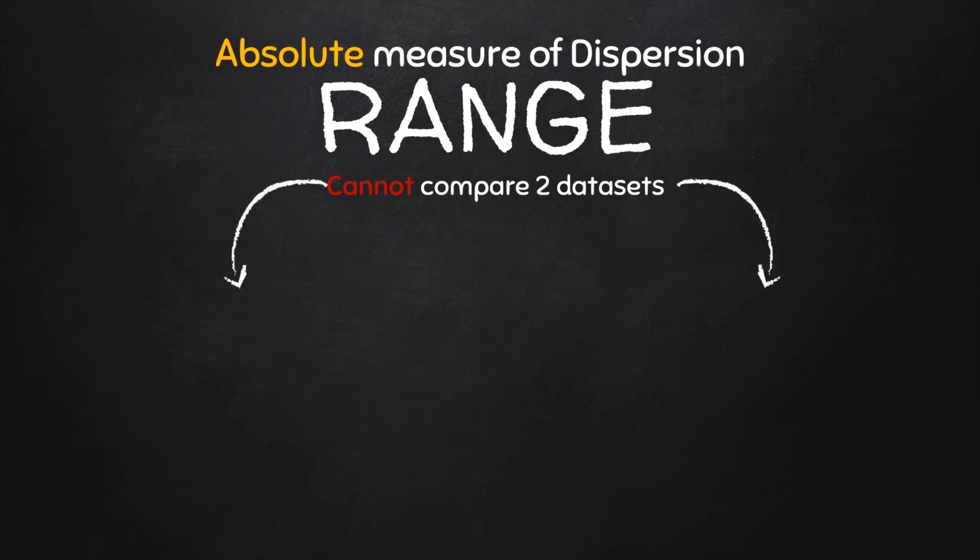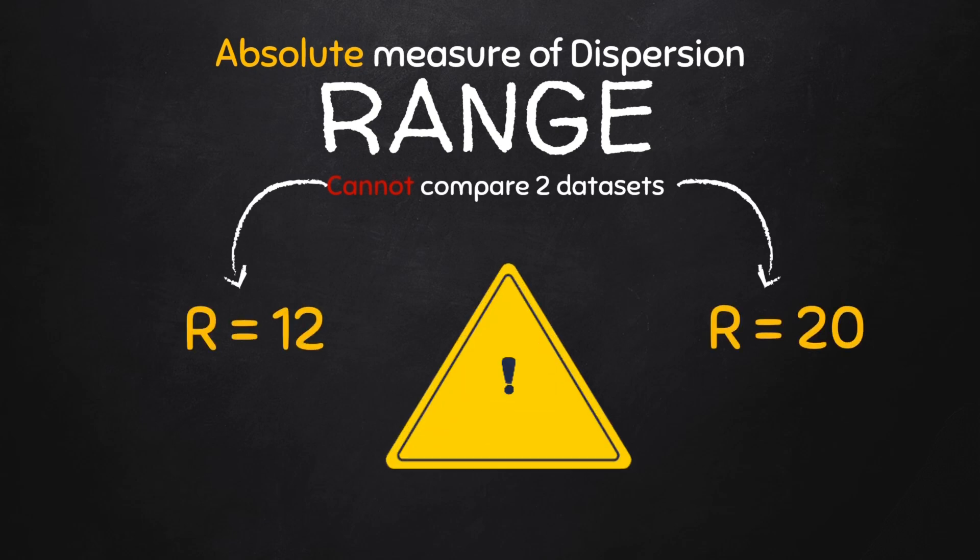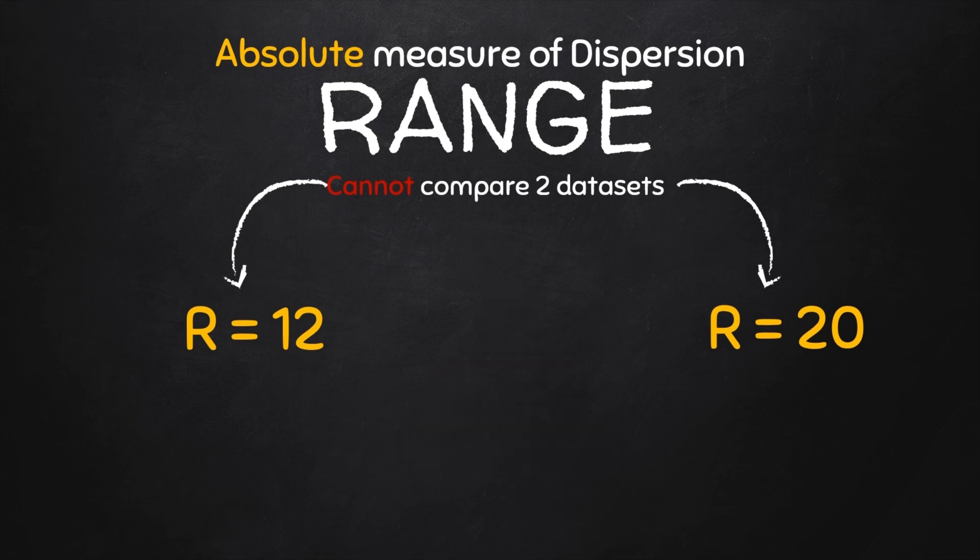Similarly, if we have one data set with a range of 12 and another one with a range of 20, we cannot say based on this range that one is more dispersed than the other. So a measure of absolute dispersion does not in and of itself tell whether the variation is large or small.